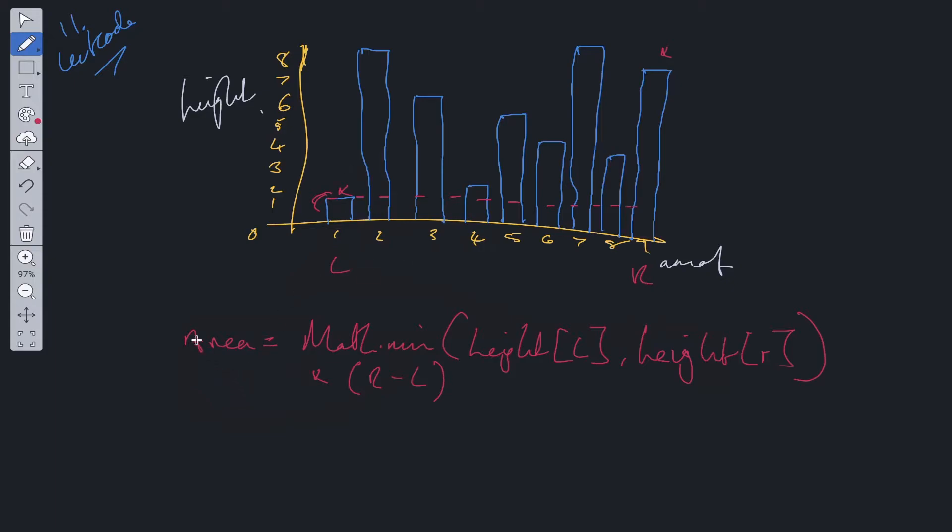What we're going to do then is add it to a maximum variable. Say we have a variable called maxima and it starts off at zero. We calculate this area, it's 9 minus 1 which is 8 times by 1, so this will be increased to 8.